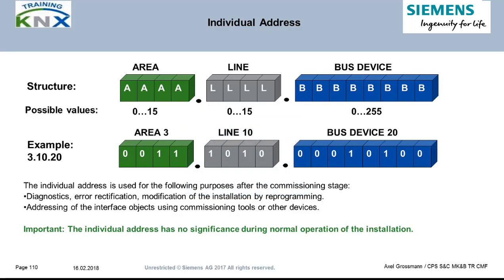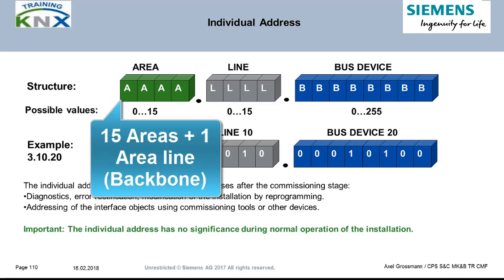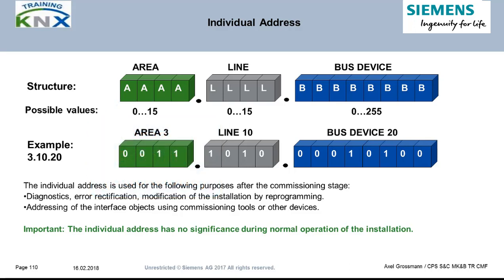The highest level of the KNX hierarchy is described by the area address, also 4 bits long. This gives us 15 areas plus 1 area line. The interconnection line of the areas has the number 0, including the line address 0.